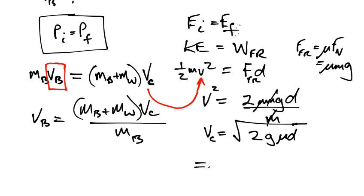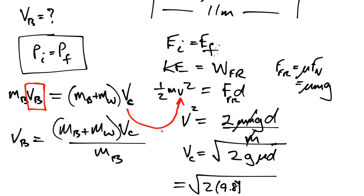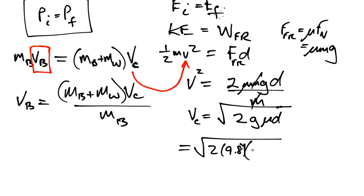So, let's plug in some values here. 9.8 meters per second squared, and mu was 0.28, correct 0.28, and D I think was 11 meters. So what do we get for the V?